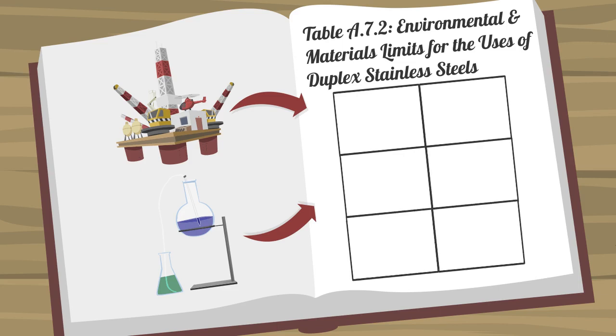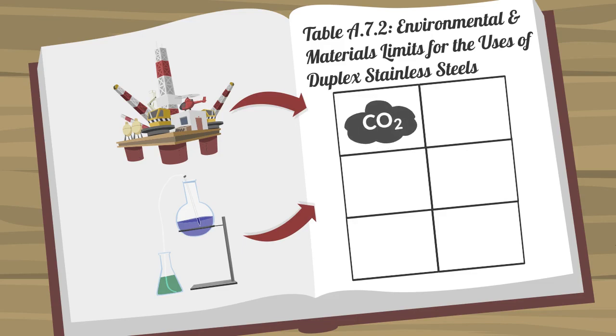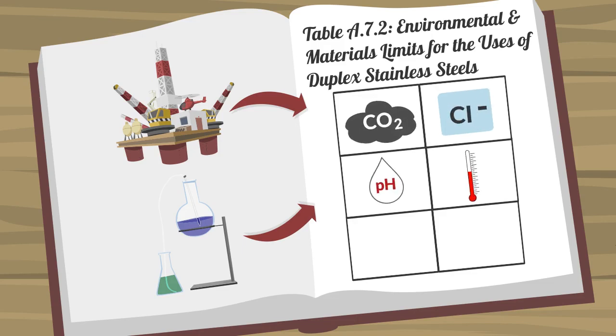For some alloys, the H2S threshold limits consider CO2, chlorides, pH, temperature, hardness, and yield strength.